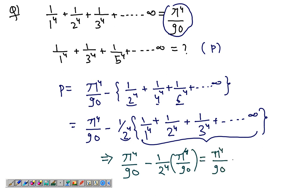And you're left with 1 take away 1 over 2^4, which is 16. Now, solving this will actually give you π^4 over 96, and this is the required sum P of the series up to infinite terms.